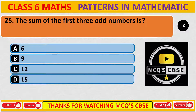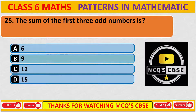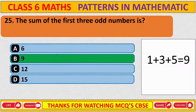The sum of the first three odd numbers is — the correct answer is 9. The first three odd numbers are 1, 3, and 5. When we add them, we get 9. So the correct answer is B: 9. Thanks for watching MCQCBSC.